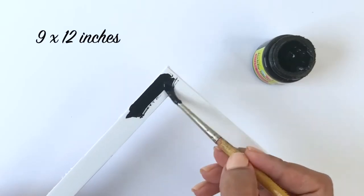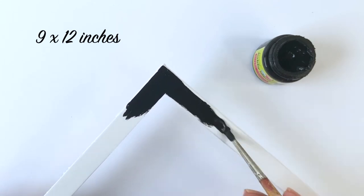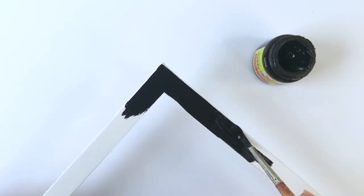Cut another piece of the sunboard in the given dimensions with a half an inch border and paint it with some black acrylic paint.